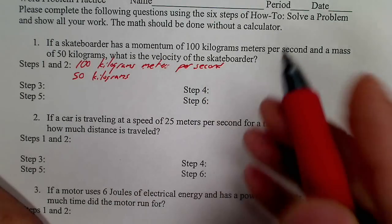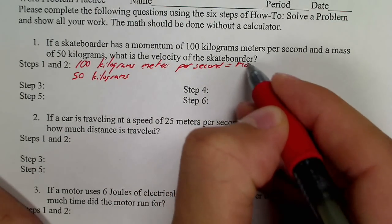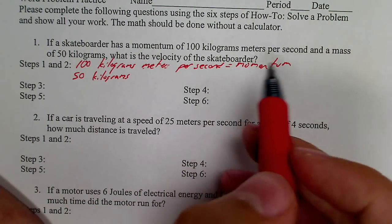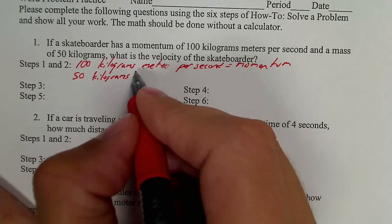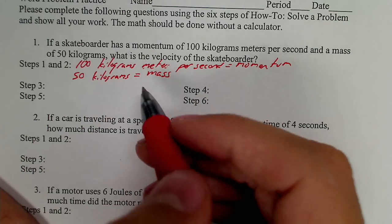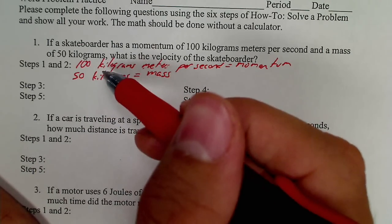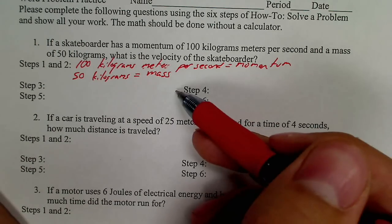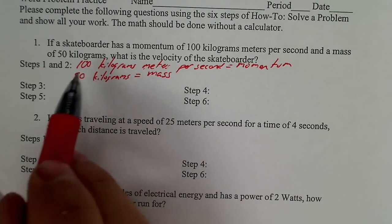It says right here, momentum of 100. We know that this 100 kilograms meters per second is a momentum and a mass of 50 kilograms. We know that this is a mass. Now that we have the numbers written down and we have the units included and we've identified their measurements, we go to step three.